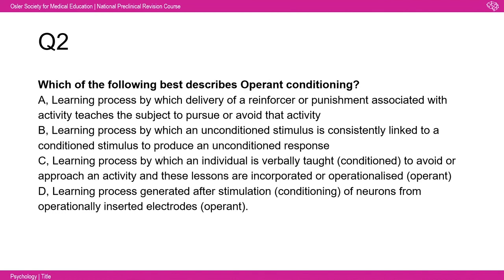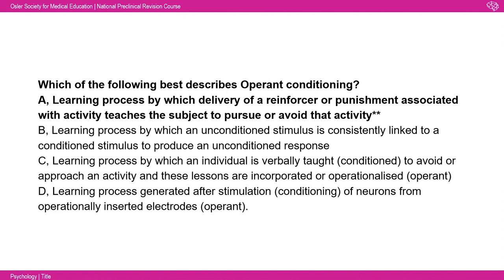The answer is A. With operant conditioning you have the delivery of a reinforcer or punishment associated with how the animal acts to pursue or avoid that activity — based on positive reinforcement, positive punishment, negative reinforcement, or negative punishment. If you learn that table, any questions on operant conditioning will be fine. Question three asks which of the following is an example of classical conditioning.